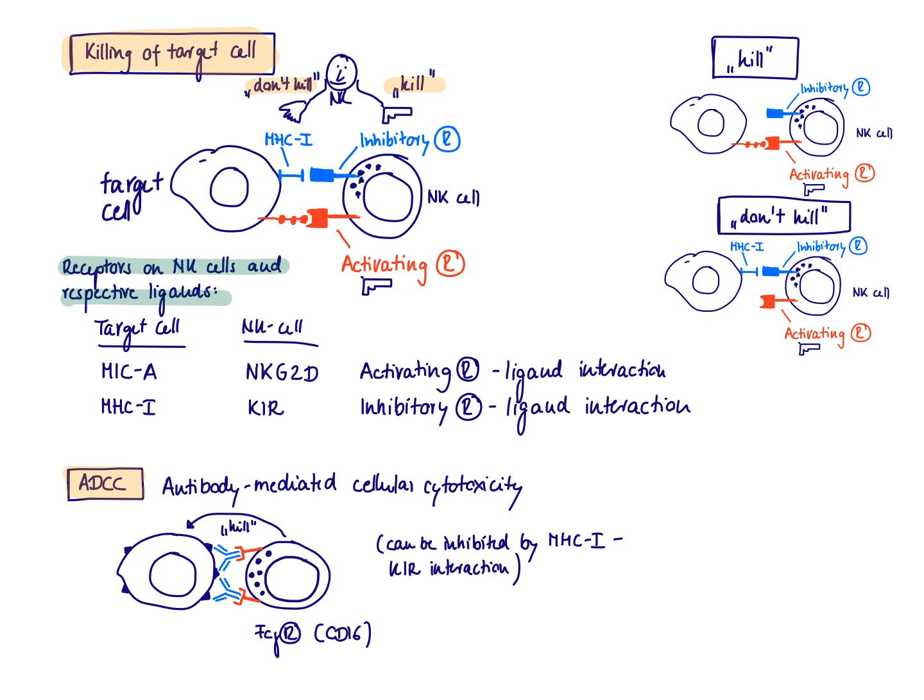Let's look next at what the activating receptor, the one that would like to kill the cell, is looking for on the target cell. It's looking for so-called activating ligands. Once a cell is virally infected or transformed, the cell is stressed and starts to express activating ligands, the most famous being MYC-A. So once there's engagement between the activating receptor and the activating ligand, the NK cell is going to try to kill the target cell.